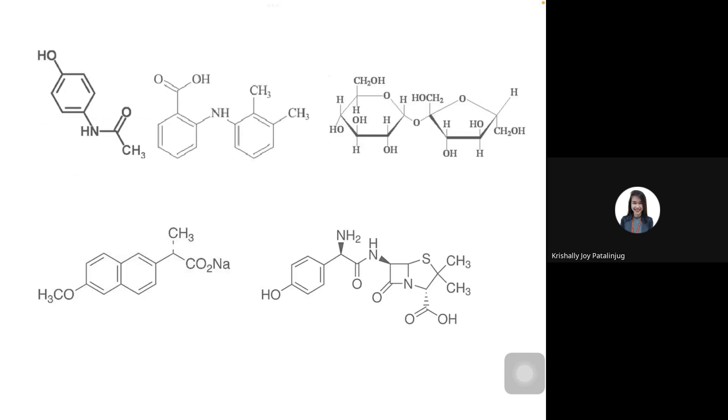Now I want you to look at the following structures. For now, these structures may look unfamiliar and complex. But actually, these are structures of familiar molecules. You are familiar with paracetamol, marketed under the brand name Biogesic. That's the structure of paracetamol. Dolfenal, the mefenamic acid, that's its structure. Sugar, a disaccharide, combination of fructose and glucose.